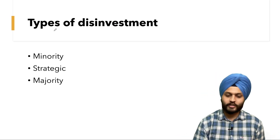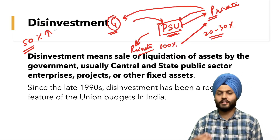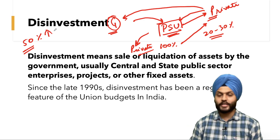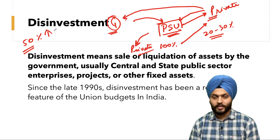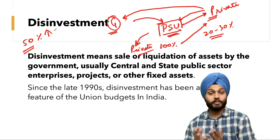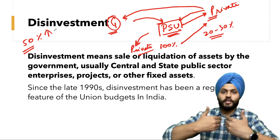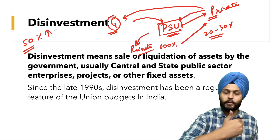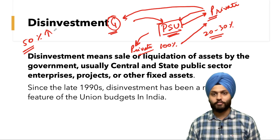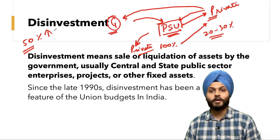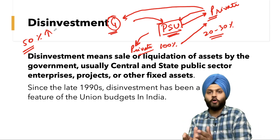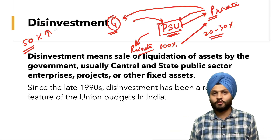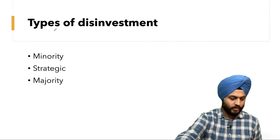The next type is majority or complete disinvestment. Take Air India as an example — the government decided to sell it to the private sector. Air India has a lot of assets: land, offices, planes, and aircraft. The government frees up both the ownership and management responsibility of the PSU to the private sector — this is known as complete disinvestment.